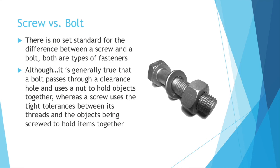No screw video is complete without talking about a screw versus a bolt. Believe it or not, there is no set standard for the difference between a screw and a bolt. Both are types of fasteners, although it is generally true that a bolt will pass through a clearance hole and use a nut to hold the object together, whereas a screw uses the tight tolerances between its thread and the object to actually hold the objects together. Bolts typically use nuts; screws don't need them. That's the general accepted difference between them.